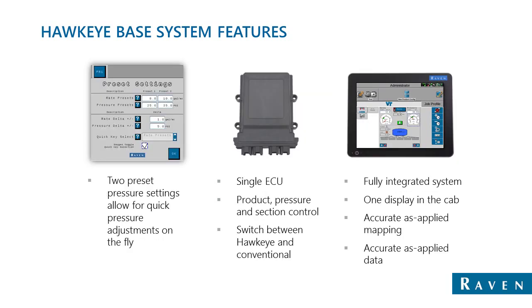There are two presets for both rate and pressure — these are operator-defined. You also get a rate bump and a pressure bump. The two rate presets allow for larger jumps, while the rate bumps allow for smaller incremental changes while operating. In the center of the screen is the main Hawkeye ECU, which handles all pressure, product control, and sectional control. On the right is the Viper 4 pictured with the VT run screen — this is one display in the cab that controls everything for your Hawkeye system.